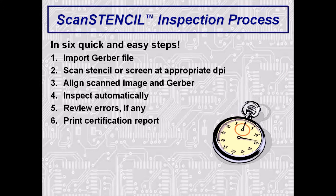Some additional reasons to use ScanStencil are the ability to inspect stencils or screens of virtually any type of material, including metal, plastic, paper, etc. Even inspect partial or half-etched features with color imaging. Inspect PCBs, fixtures, tooling, and virtually any flat part. Verify that the stencil matches the PCB for the customer before production. One system can be used for both inspection and data creation. The ScanStencil is PC-based, so it's fast and easy to use.